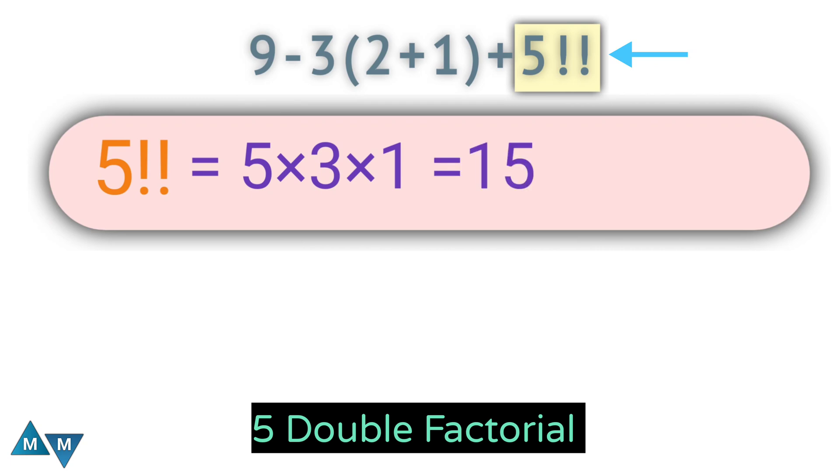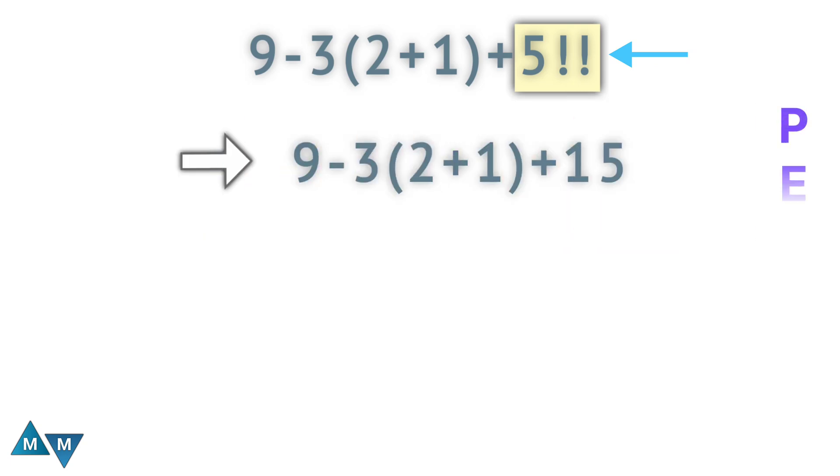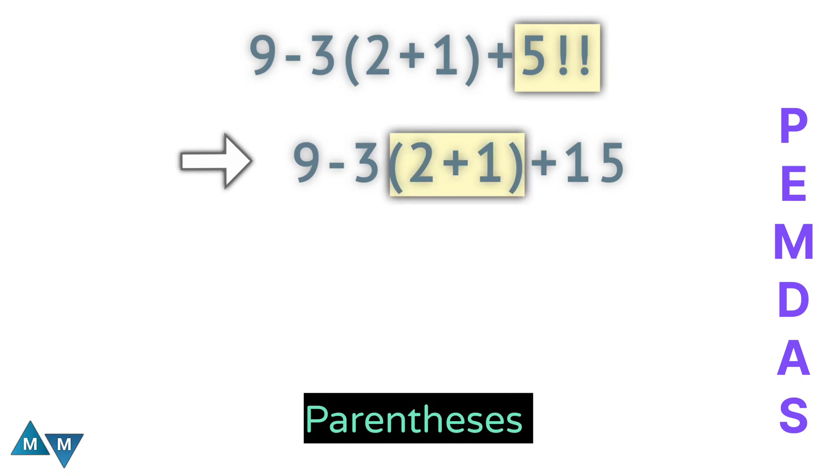Now let's replace this 5 double factorial with 15. The expression becomes 9 minus 3 parentheses 2 plus 1 plus 15. So the first thing we're going to do is parentheses. 2 plus 1 will be our first move, which equals 3.